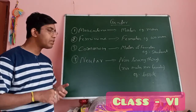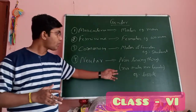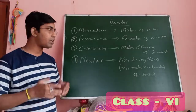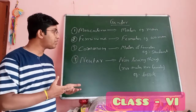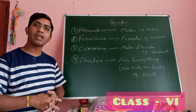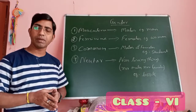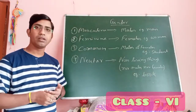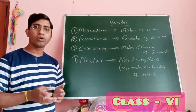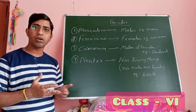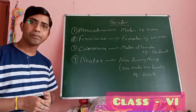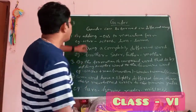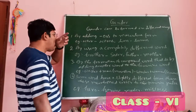The last one is neutral gender, which refers to non-living things — not males, not females. Example: 'book'. You cannot say whether a book is male or female. That is neutral gender.